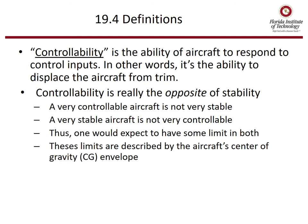Finally, we're getting into controllability. The course is called stability and control — we've talked about stability, now we define control. Controllability is the ability of the aircraft to respond to control inputs, meaning the ability to displace the aircraft from trim. It's really the opposite of stability — a very controllable aircraft is not very stable, and a very stable aircraft is not very controllable, so we expect some limit in both.